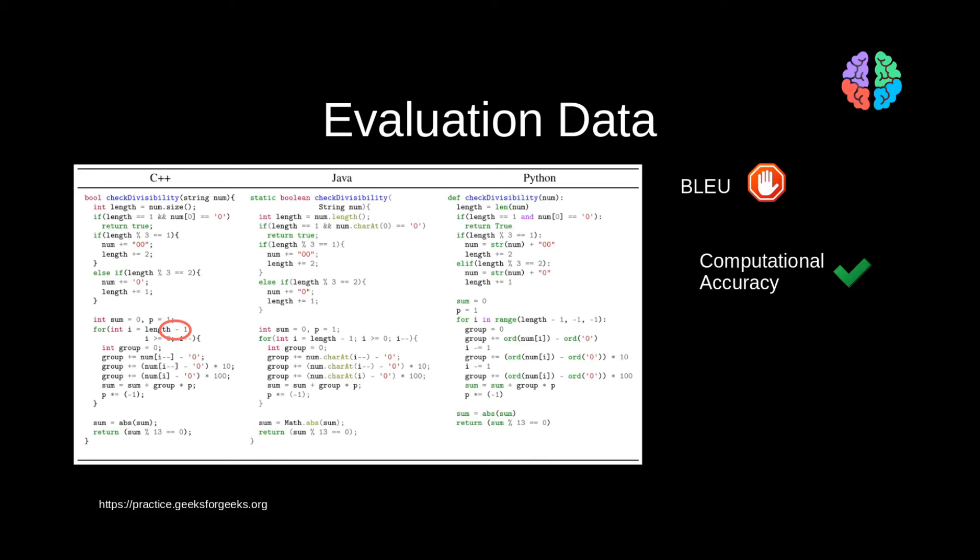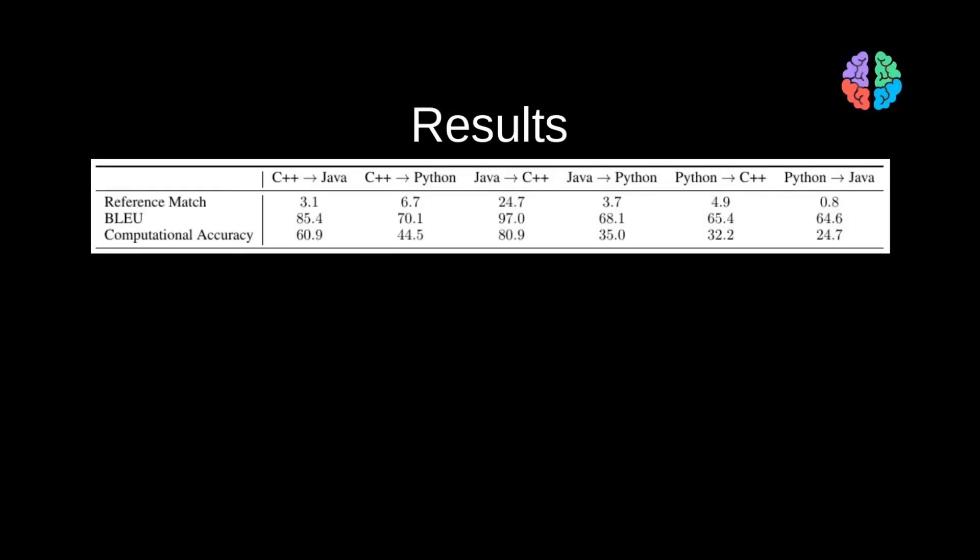So BLEU is not a great metric. So they introduce a metric called computational accuracy. As the name suggests, they literally compare the outputs of the translated functions by running several unit tests.